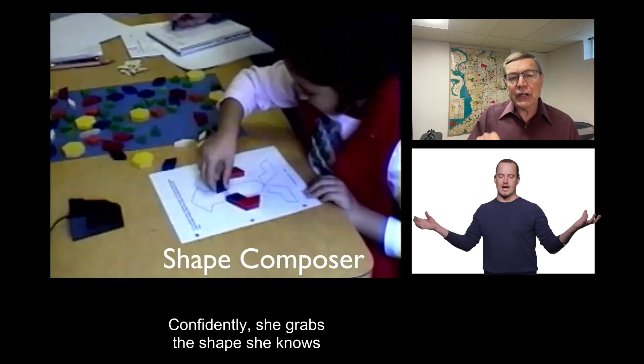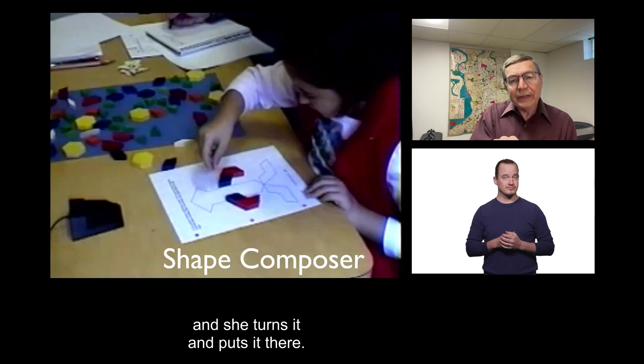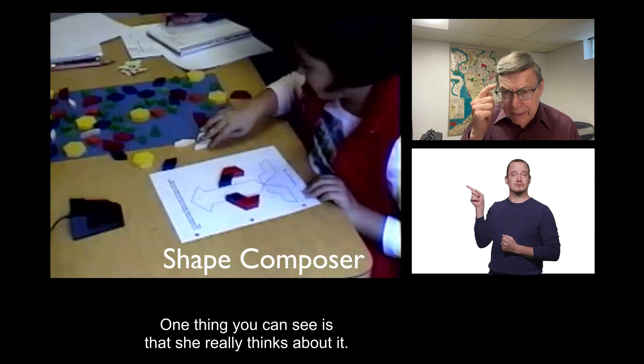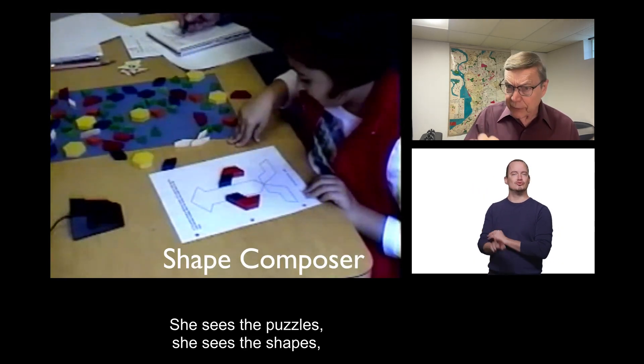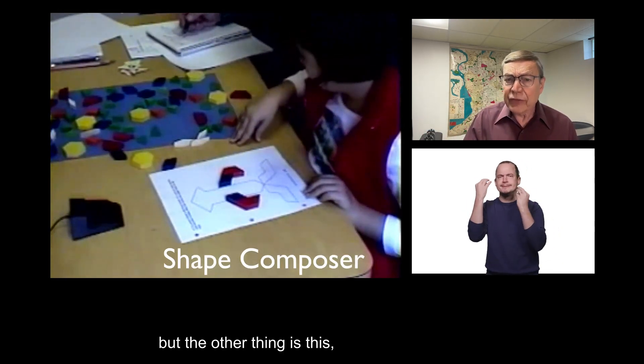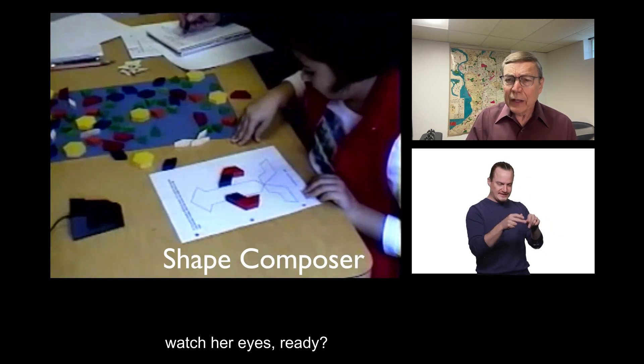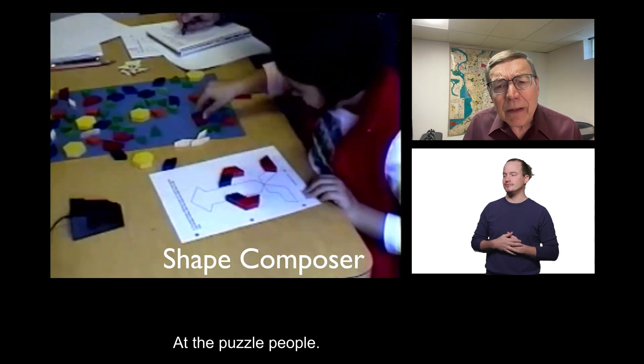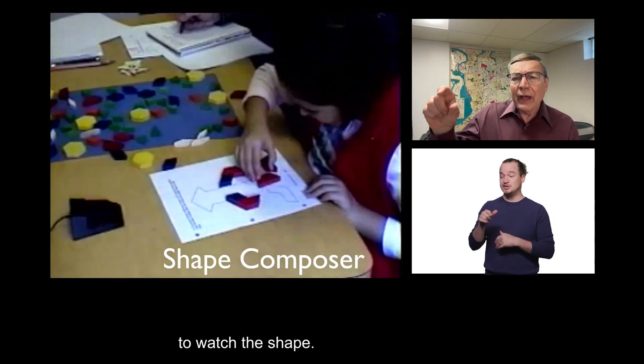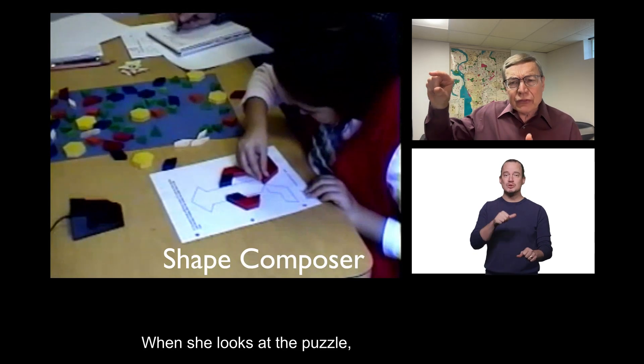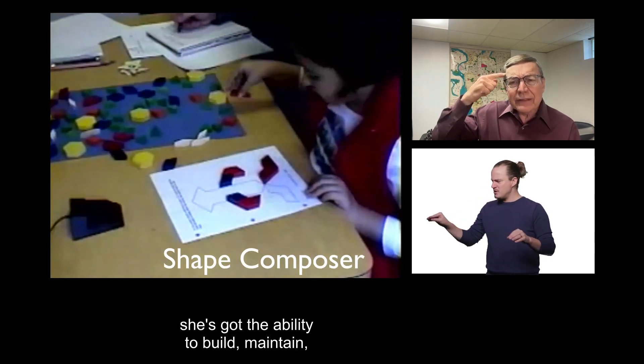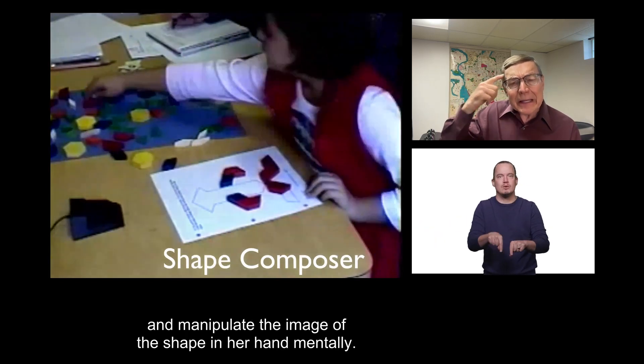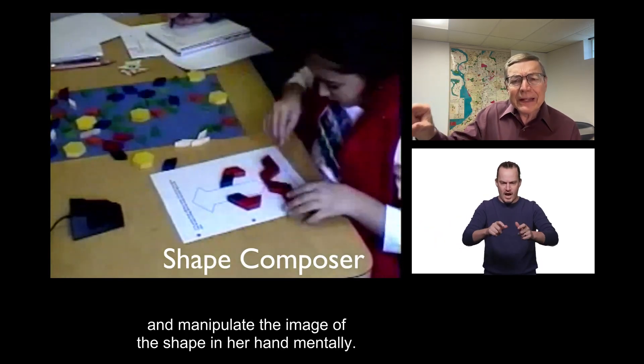Confidently. She grabs the shape she knows, and she turns it and puts it there. Now, watch this. One thing you can see is that she really thinks about it. She sees the puzzles. She sees the shapes. But the other thing is this. Watch her eyes. Ready? When she picks up a shape, then where does she look? At the puzzle, people. She doesn't need to watch the shape. When she looks at the puzzle, she's got the ability to build, maintain, and manipulate the image of the shape in her hand mentally.